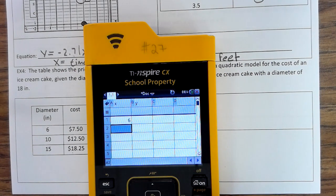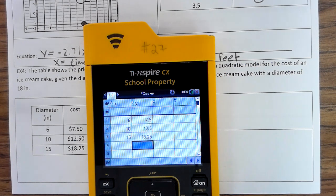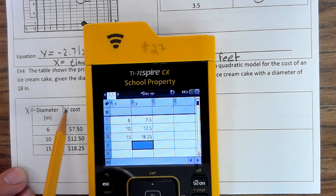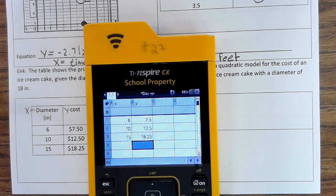6, 10, 15, $7.50, $12.50, $18.25. Now, I'm using X for diameter and Y for cost.